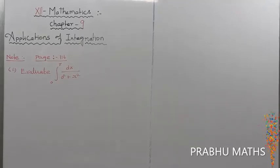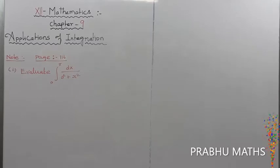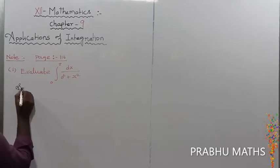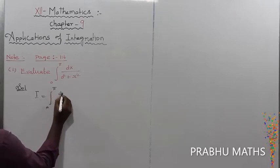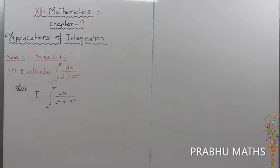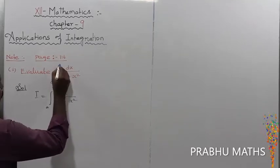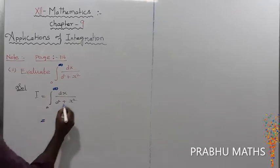Note page number 116, second subdivision. First subdivision exam 9.35: evaluate the integral from a to pi — actually to infinity — of dx divided by a squared plus x squared. So I is equal to the integral from a to infinity of dx divided by a squared plus x squared. This is called an improper integration because the upper limit goes to infinity.